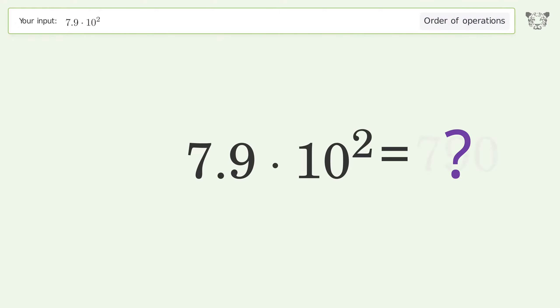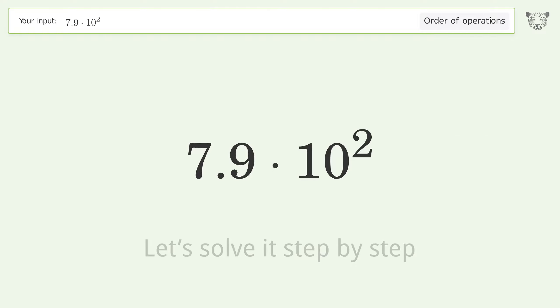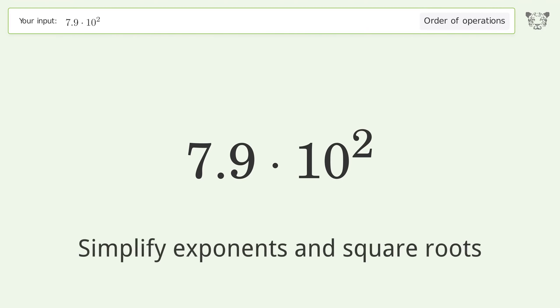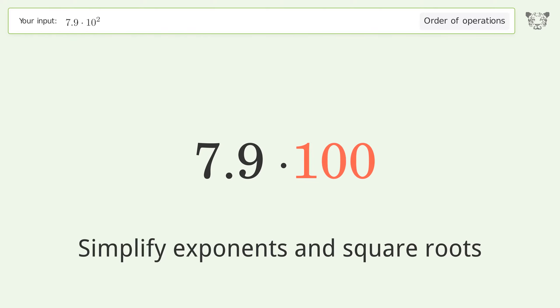You asked Tiger to calculate. This deals with the order of operations. The final result is 790. Let's solve it step by step.